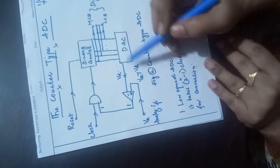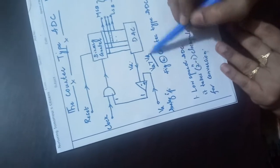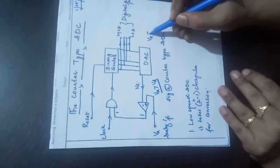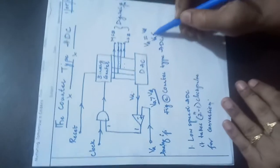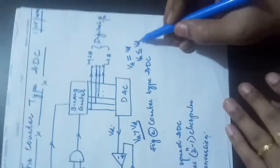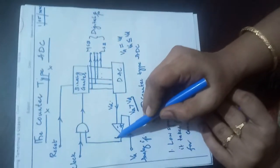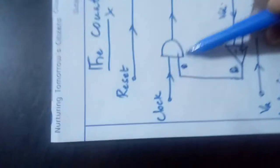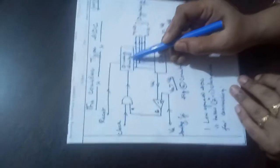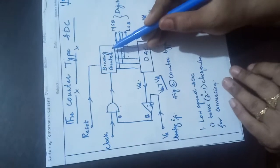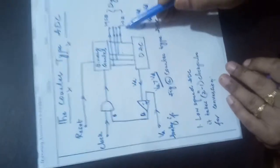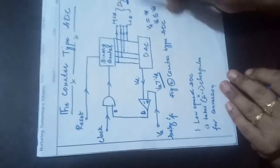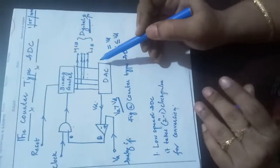When VA is equal to or less than VD, the output of the comparator goes low — that is zero. When this zero is given to the AND gate, the AND gate is disabled and the clocks are stopped. Whatever clocks were fed to the binary counter earlier, that count is the digital representation of our analog input signal. This is the operation of the Counter Type ADC.